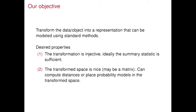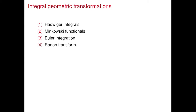The approach we're going to take is to transform the data. The transformation will be injective. We want the transform space to have a nice metric property — sometimes it will even become a matrix — and I should be able to do statistical manipulations in this transform space. That's the theme of this first half of the talk. There are various types of integral geometric transformations, going under names of Hadwiger integration, Minkowski functionals, and Euler integration. A very classic one used with CT images is the Radon transform.